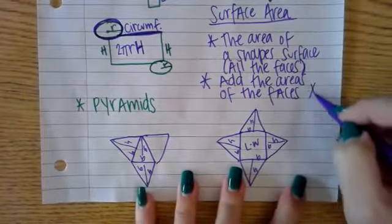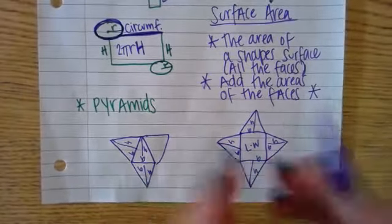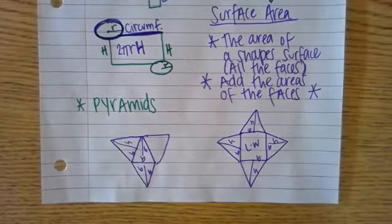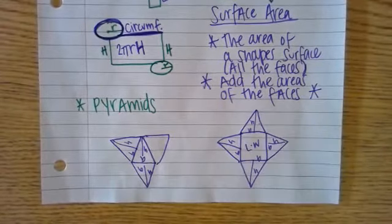All we have to do when we find the surface area is break down our shape so we can see all the surfaces that are there, and we add the area of all the faces.